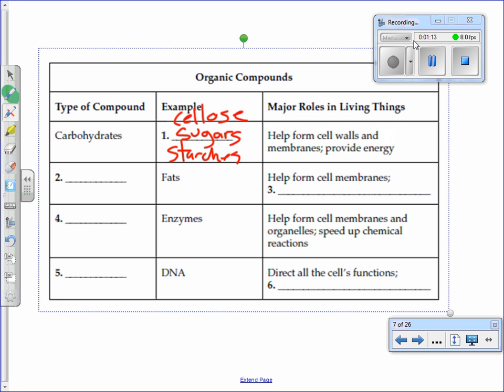One more carbohydrate? Yes, cellulose. So that's going to be like grains. We have complex carbohydrates like grains and oatmeal and whole wheat and things like that that take a long time to digest. We have simple carbohydrates like sugars that we can digest very quickly. These help form cell walls in plants and cell membranes and provide energy.